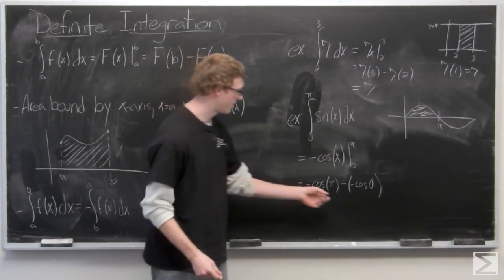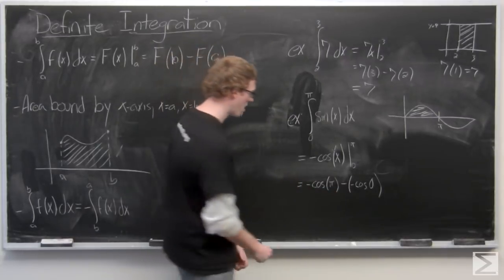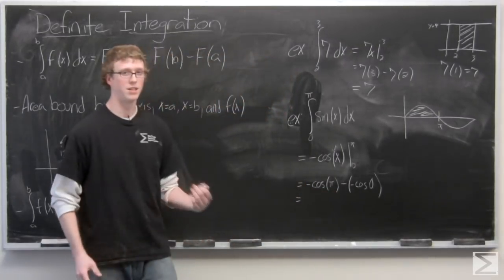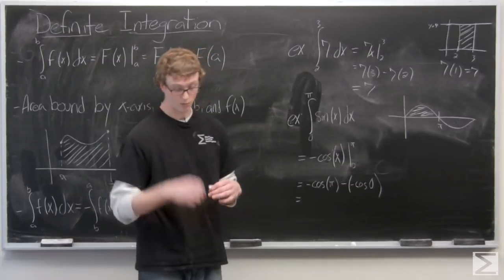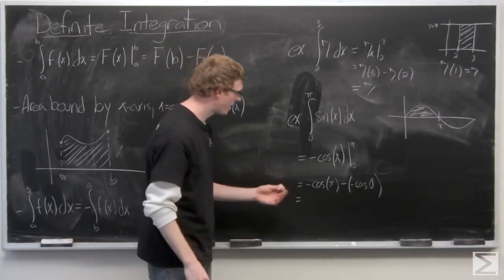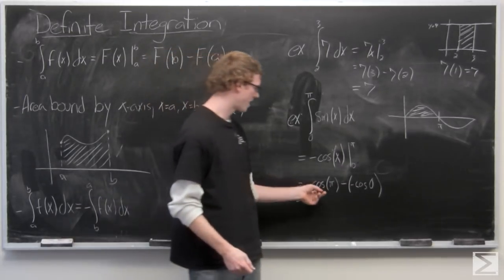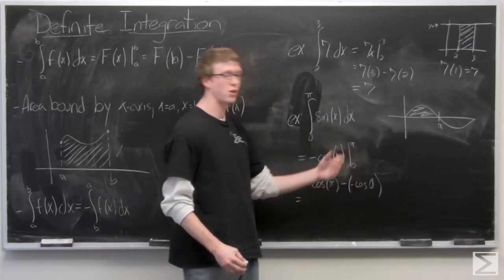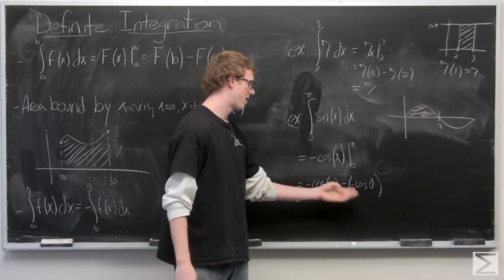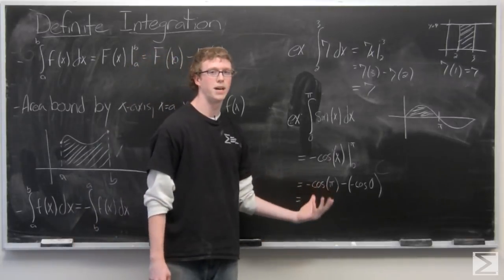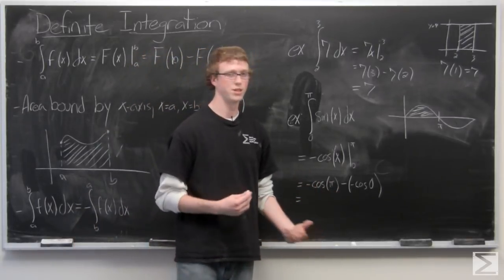Now, oftentimes a step like this is just going to be skipped out when it's easy to perform the subtraction. But in this step, we're just going to write everything out for the sake of clarity. So we have negative cosine of pi minus negative cosine of 0, which is cosine of 0 minus cosine of pi, which is 1 minus a negative 1. 1 plus 1 is 2.